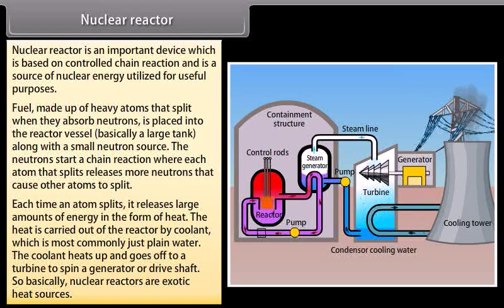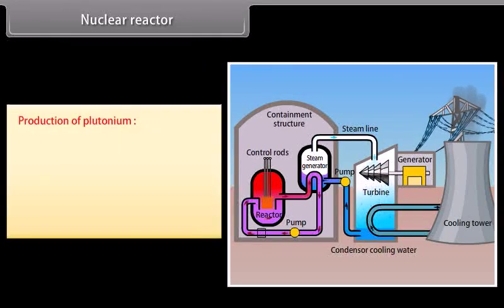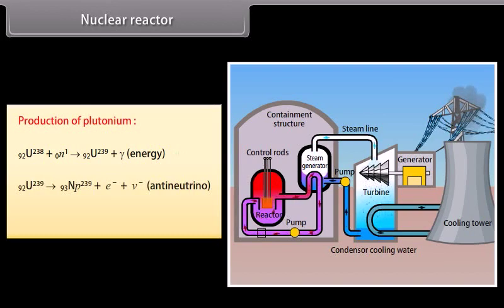In a generator or drive shaft, so basically nuclear reactors are exotic heat sources. Production of plutonium: Some fast neutrons produced in the reactor are absorbed by uranium-238. As a result, it is converted into an unstable isotope uranium-239. Uranium-239 emits a beta particle and is converted to neptunium-239. Neptunium also emits a beta particle and is spontaneously converted into plutonium-239.